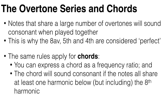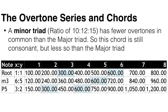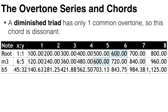The same rules apply for chords. You can express a chord as a frequency ratio, and the chord will sound consonant and pleasant if the notes all share at least one harmonic below and including the eighth harmonic. For example, the major triad — using 100 Hertz as the fundamental for simplicity — has a frequency ratio of 4 to 5 to 6, and all the notes have at least one overtone in common, so this chord is consonant. The minor triad has a ratio of 10 to 12 to 15 — we see some common overtones but fewer than the major triad, so it is still consonant but less so. And the diminished triad has only one overtone in common, so this chord is dissonant.